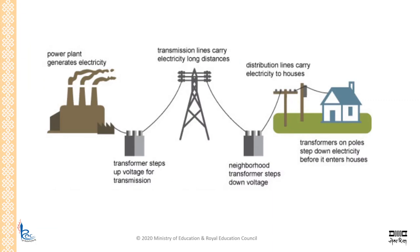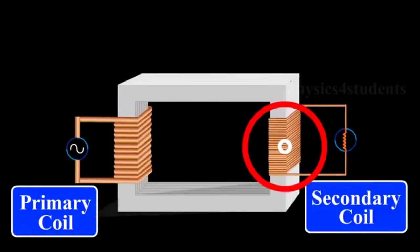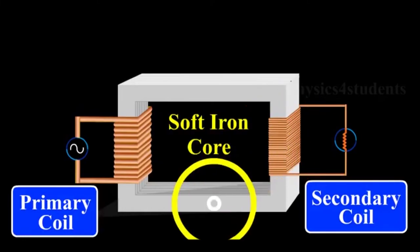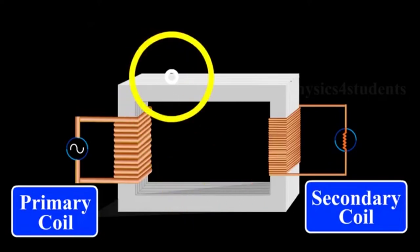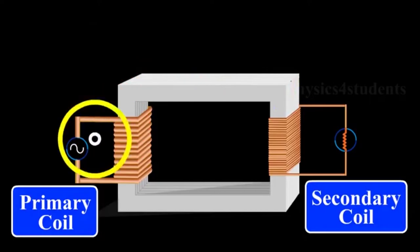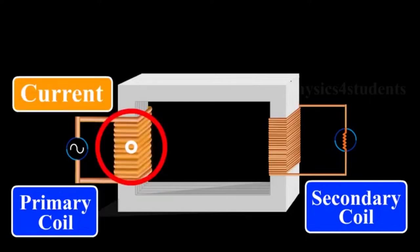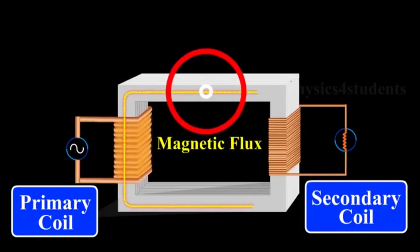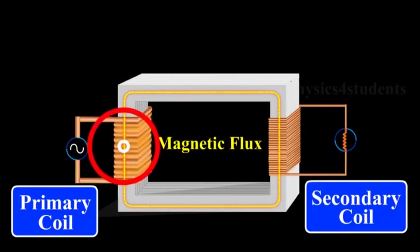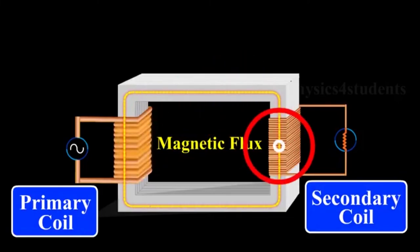Transmission of electricity from powerhouse to powerhouse requires both step-up and step-down transformers. A transformer consists of primary and secondary coils insulated from each other, wound around a soft iron core. To minimize eddy current, laminated iron core is used. The AC input is applied across the primary coil. A continuously varying current in the primary coil produces a varying magnetic flux, which is linked to the secondary coil, and hence an induced EMF is produced in the secondary coil.